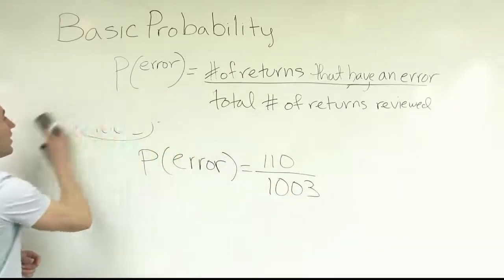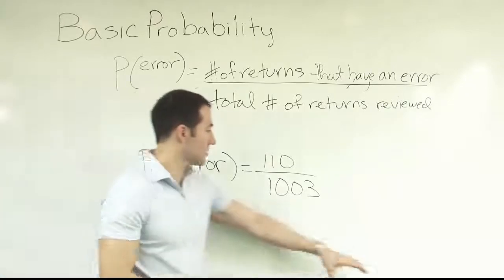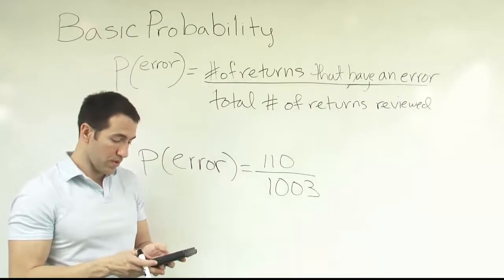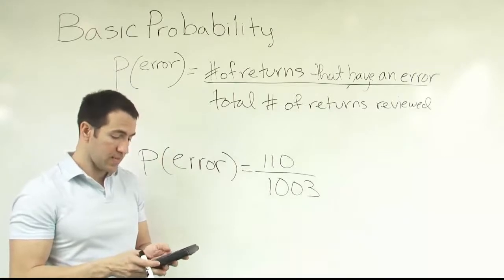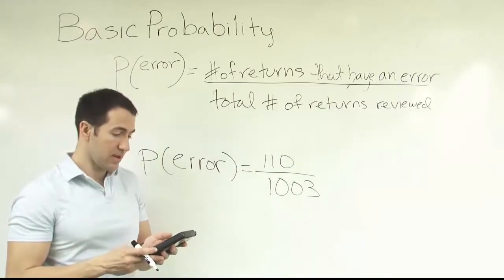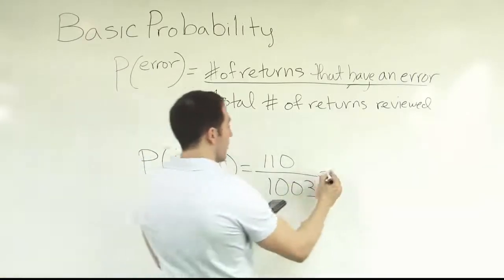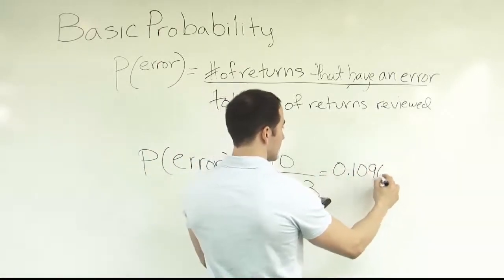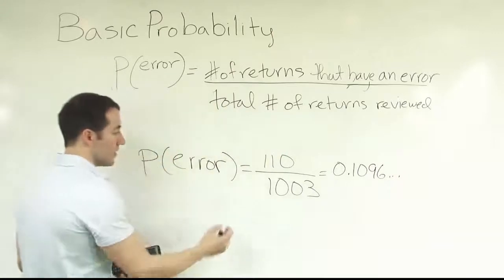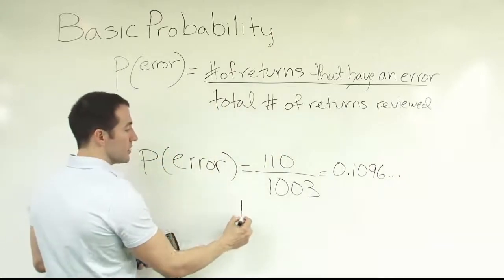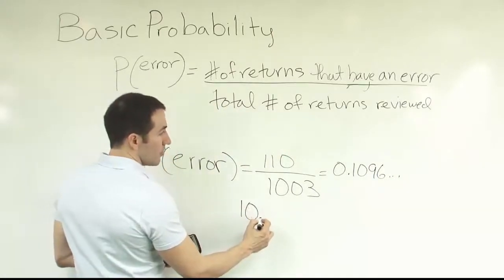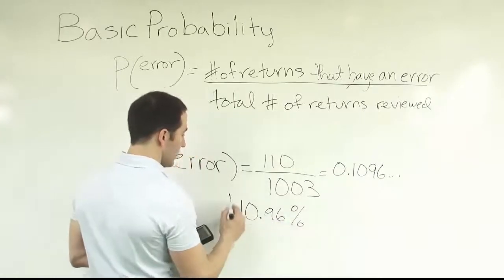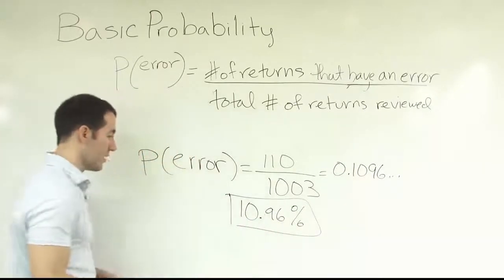And if you work that out into a decimal, 110 divided by 1003 gives us approximately 0.1096, which we can say is approximately 10.96%.